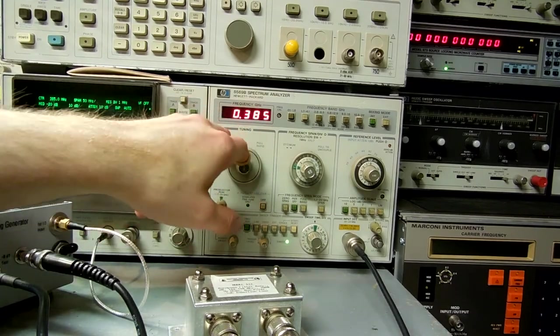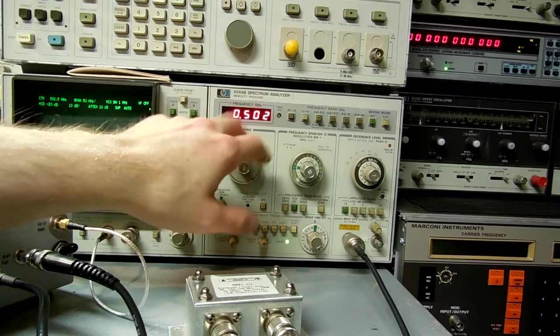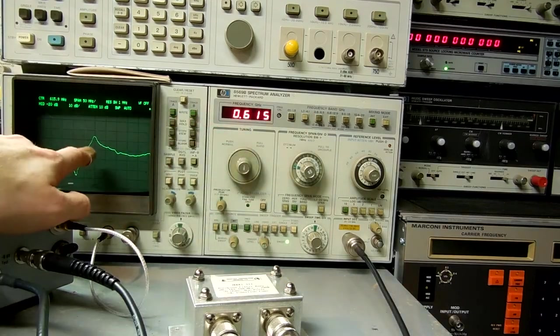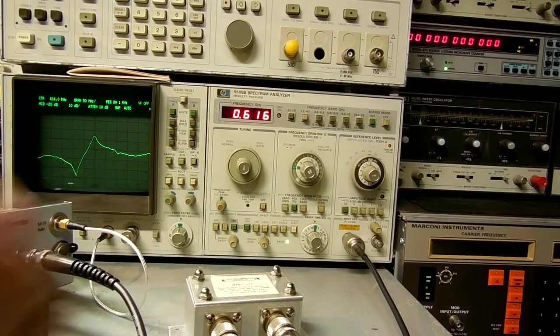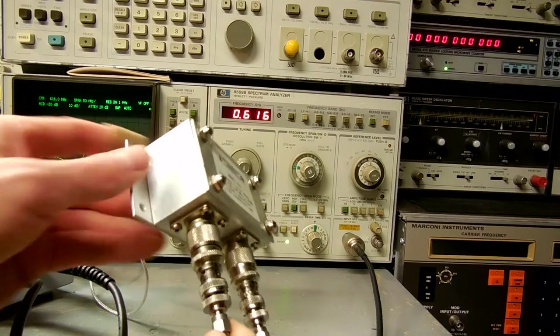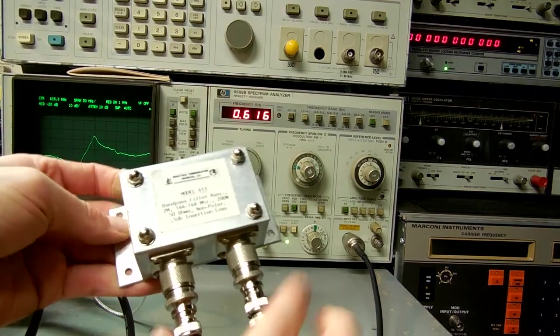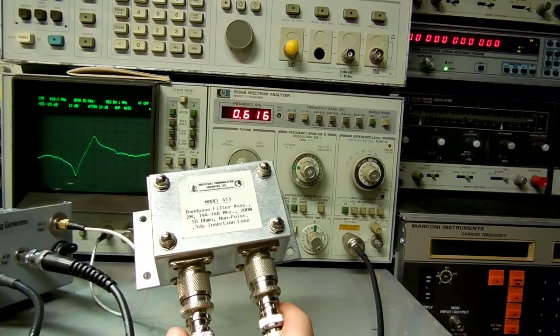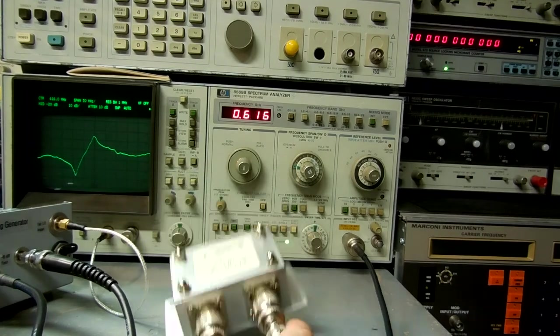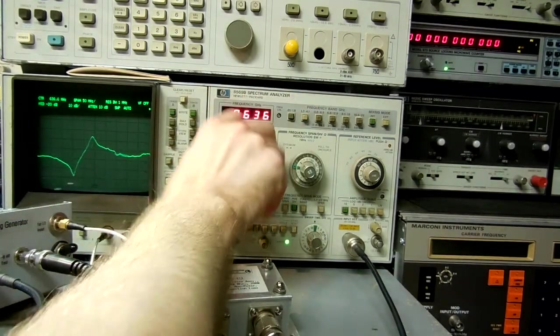And what's nice about the tracking generator here is you can see this little spike right here around 600 megahertz or so. If we were using this for knocking down interference, actually it doesn't work that well up in the 600 megahertz range, which is some of the digital TV stuff.